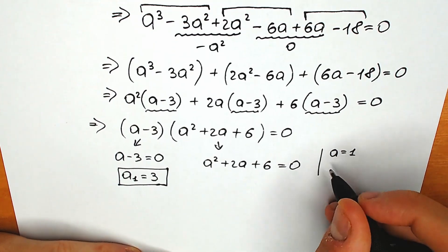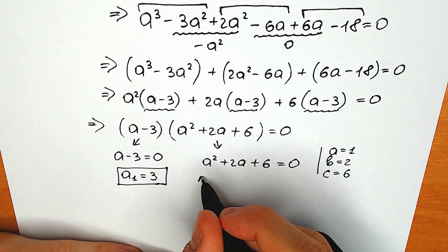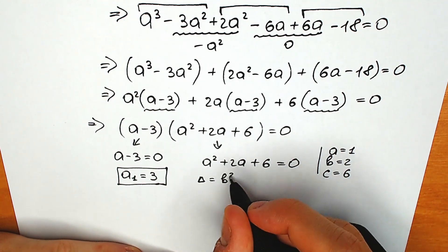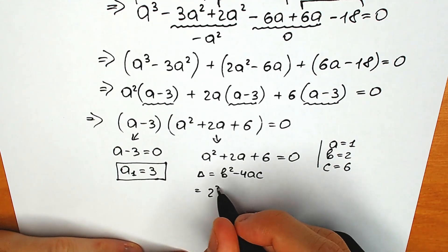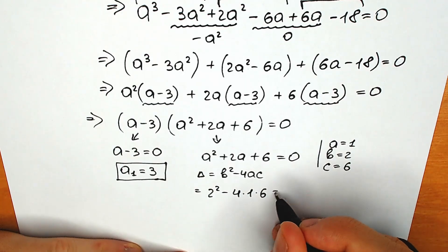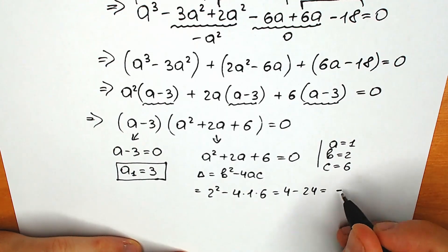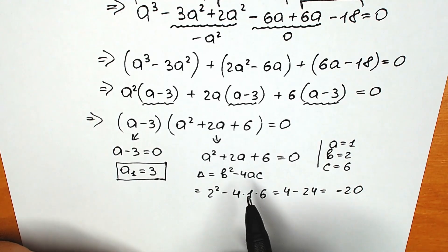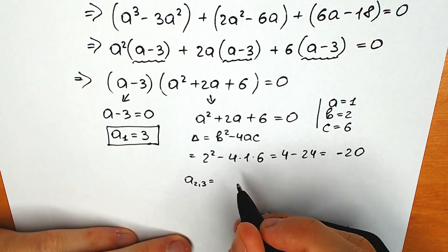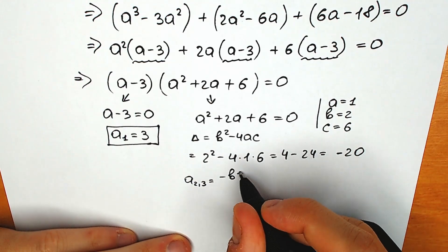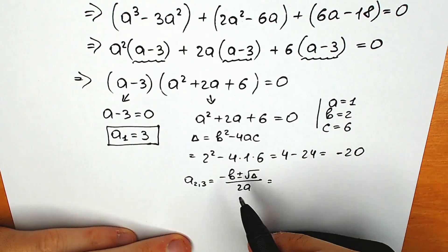Our a equals 1, b equals 2, and c equals 6. Using the standard method, let's find the discriminant: b squared minus 4ac equals 2 squared minus 4 times 1 times 6, which is 4 minus 24, giving us a discriminant of negative 20. Since the discriminant is negative, this branch will have two complex roots.